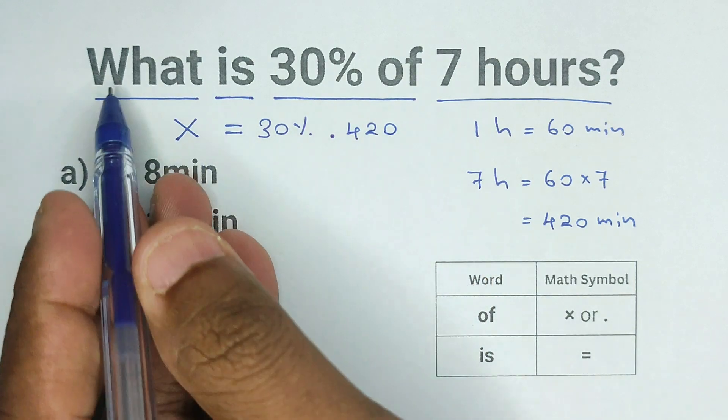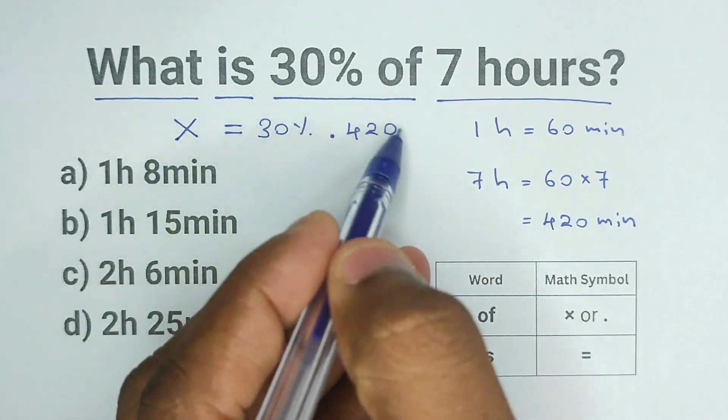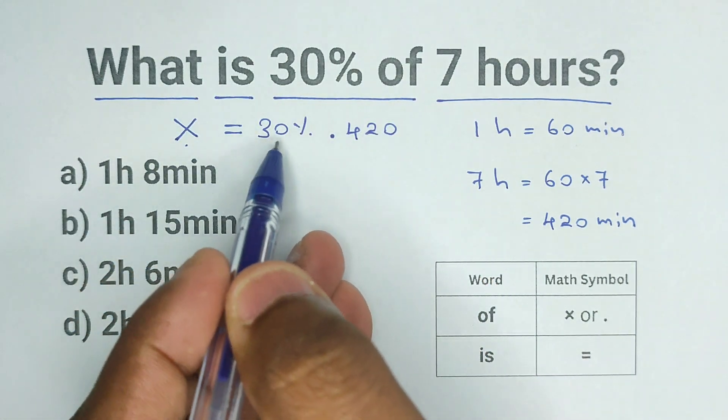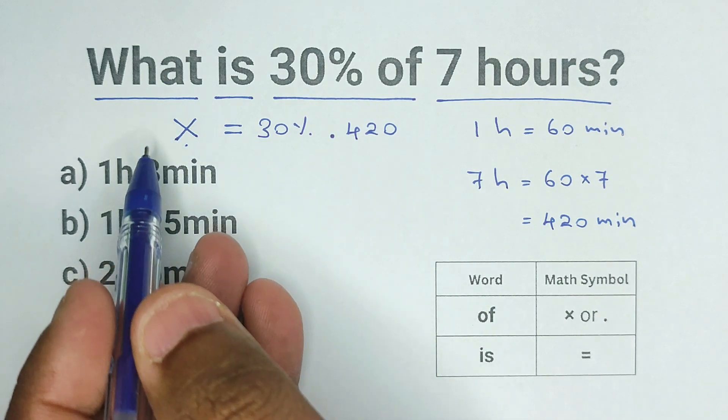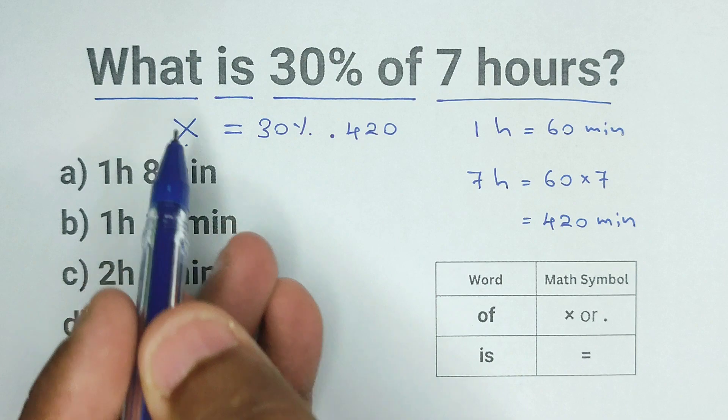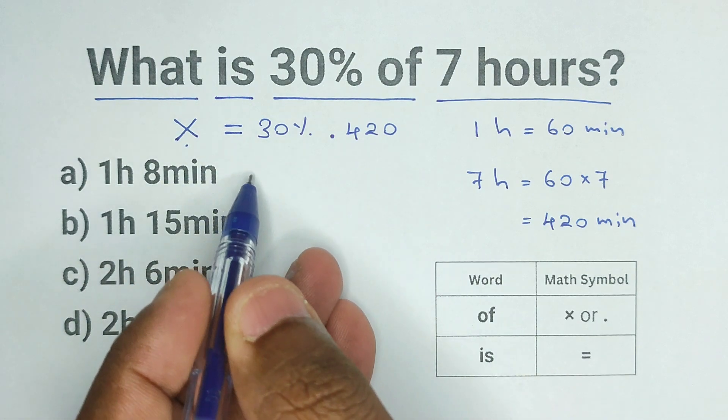Now we have rewritten the word problem into a math equation: x equals 30% times 420. So now the only thing that we need to do is solve for x. Alright, let's solve this equation.